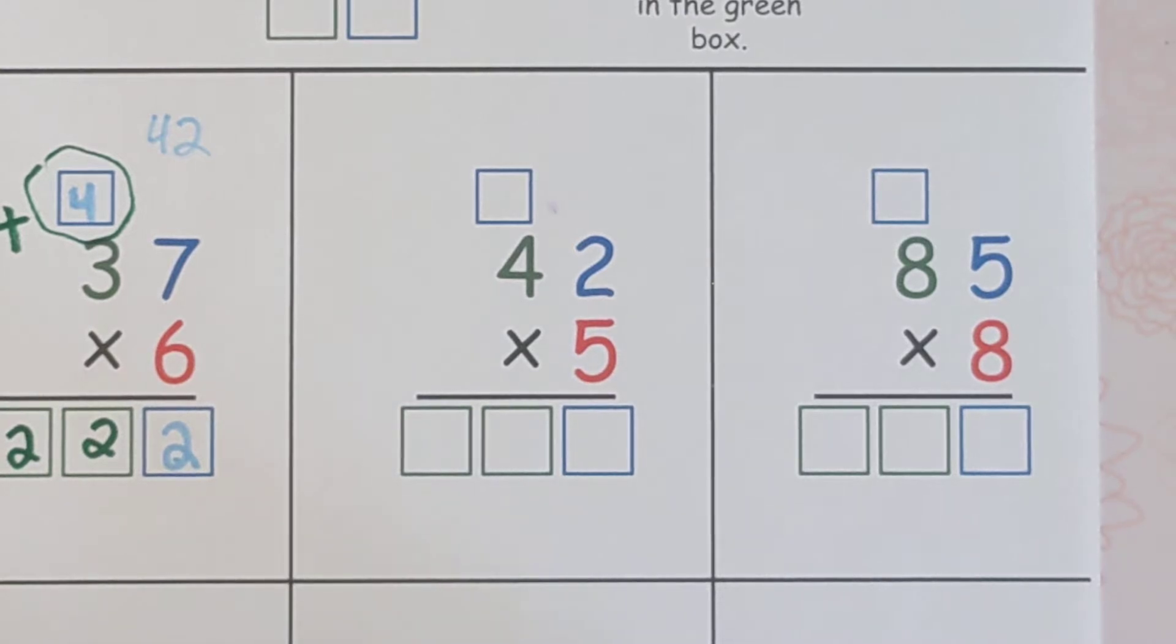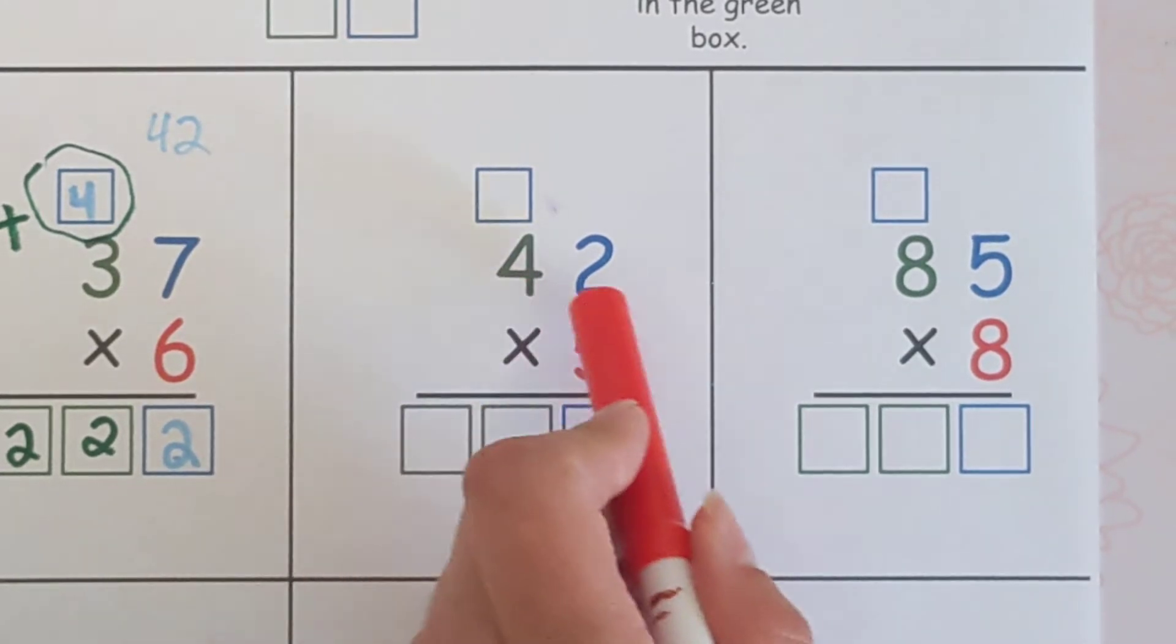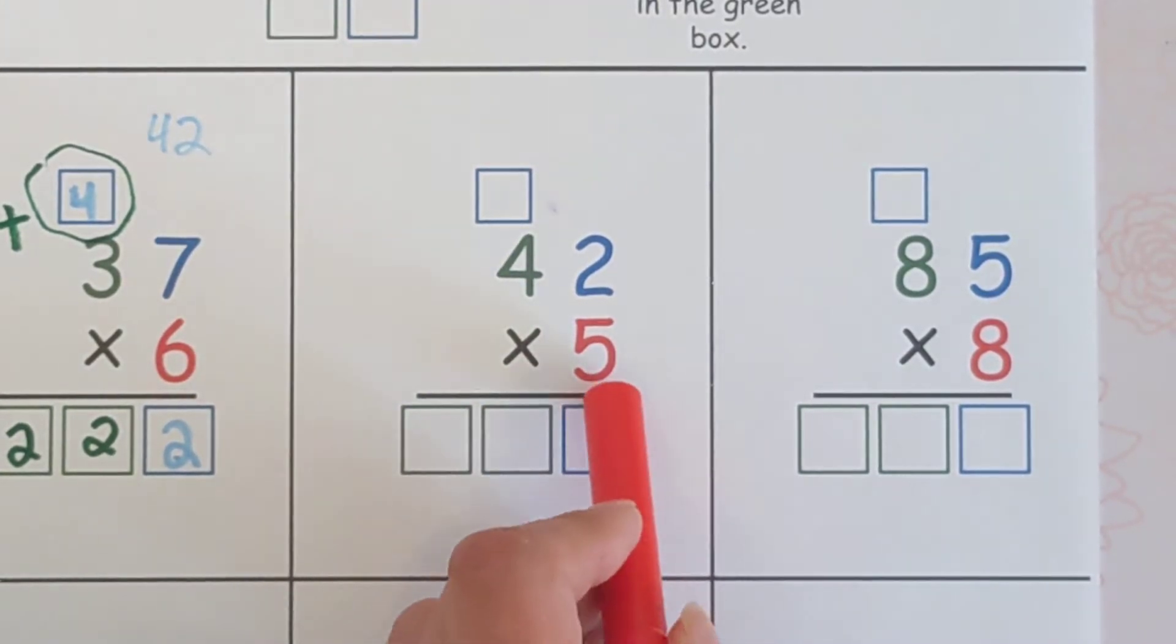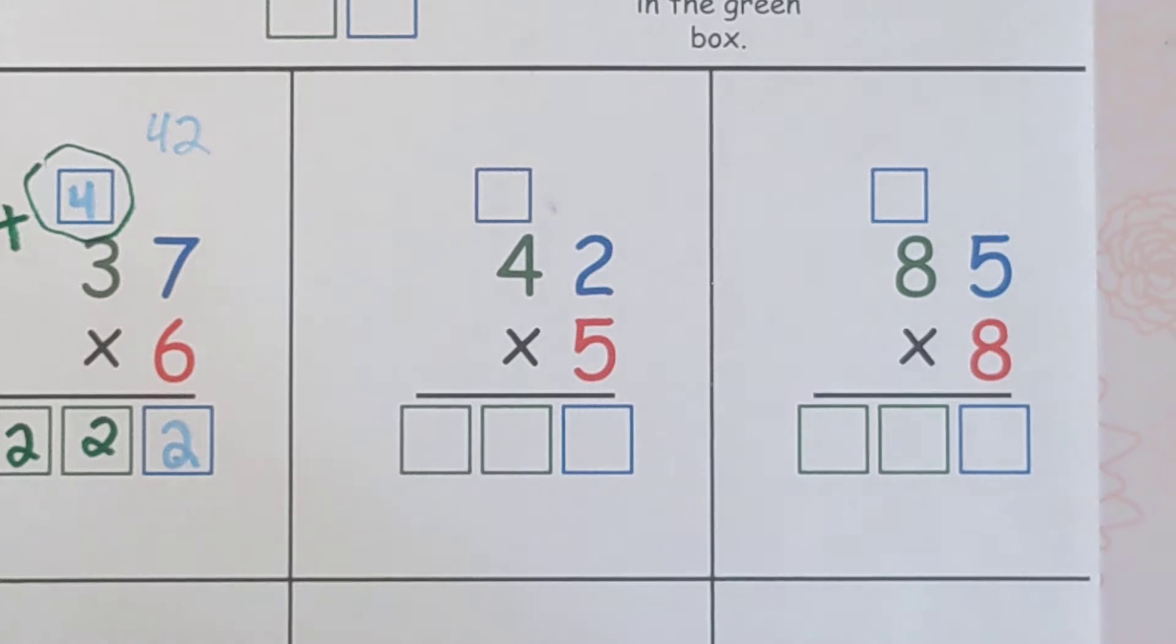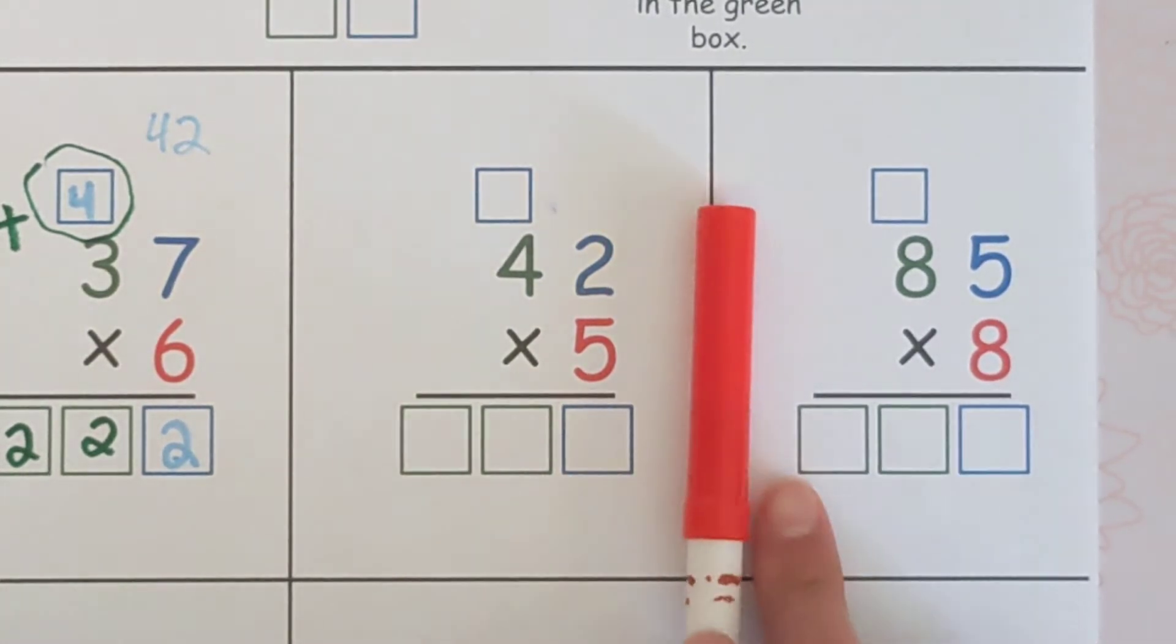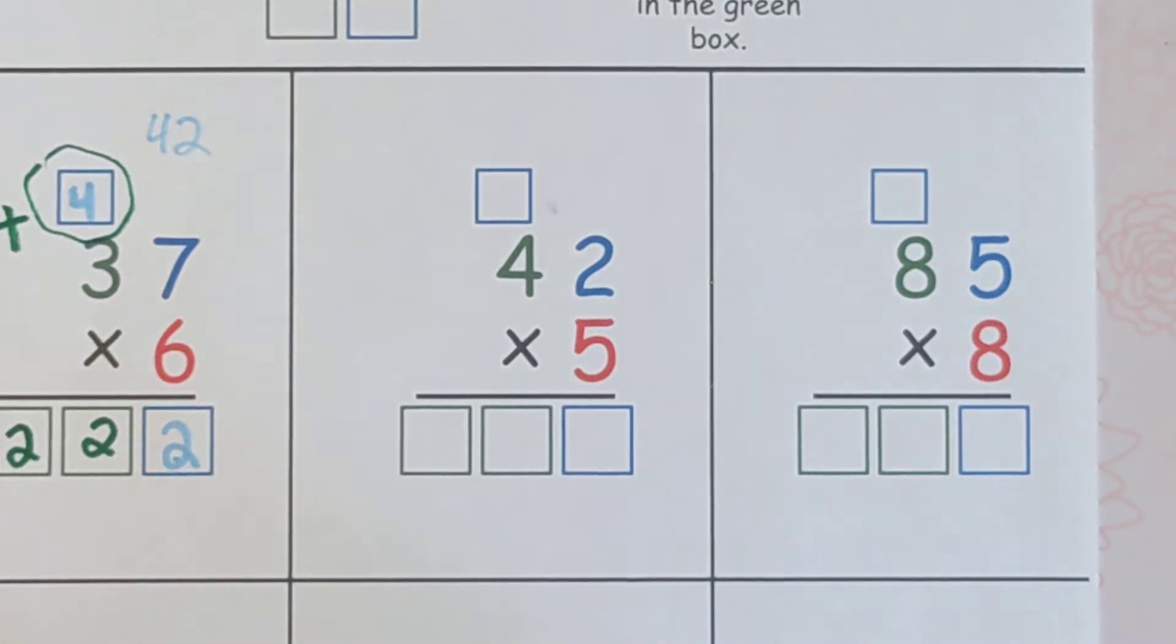So the four and the two are never going to go against each other. The five is on a different team because it's on a different row. So the five is going to battle the two and then the five will battle the four. We start on the right and then go left.